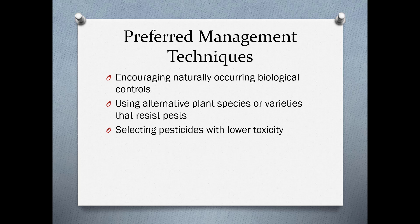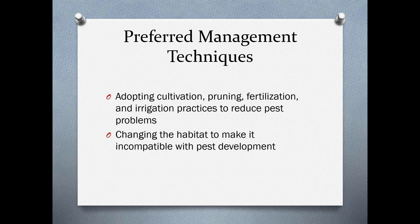Preferred management techniques include encouraging naturally occurring biological controls, which is more applicable for an outdoor nursery. Any biological controls you use in an indoor setting are going to be introduced. You want to use alternative plant species or varieties that resist pests, and then use pesticides that have lower toxicities. You also want to adopt cultivation, pruning, fertilization, and other practices to reduce pest problems.